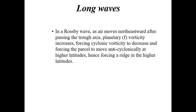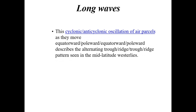This cyclonic-anticyclonic oscillation of air parcels as they move toward the equator and then toward the poles corresponds with alternating troughs and ridges — the pattern you see in the mid-latitude westerlies at the jet stream level. The dips in the jet stream are associated with troughs; the upside-down U-shape patterns are associated with upper-level ridges. This is all about the conservation of absolute vorticity — the inverse relationship between relative vorticity and planetary vorticity depending on whether a parcel moves toward the poles or toward the equator.